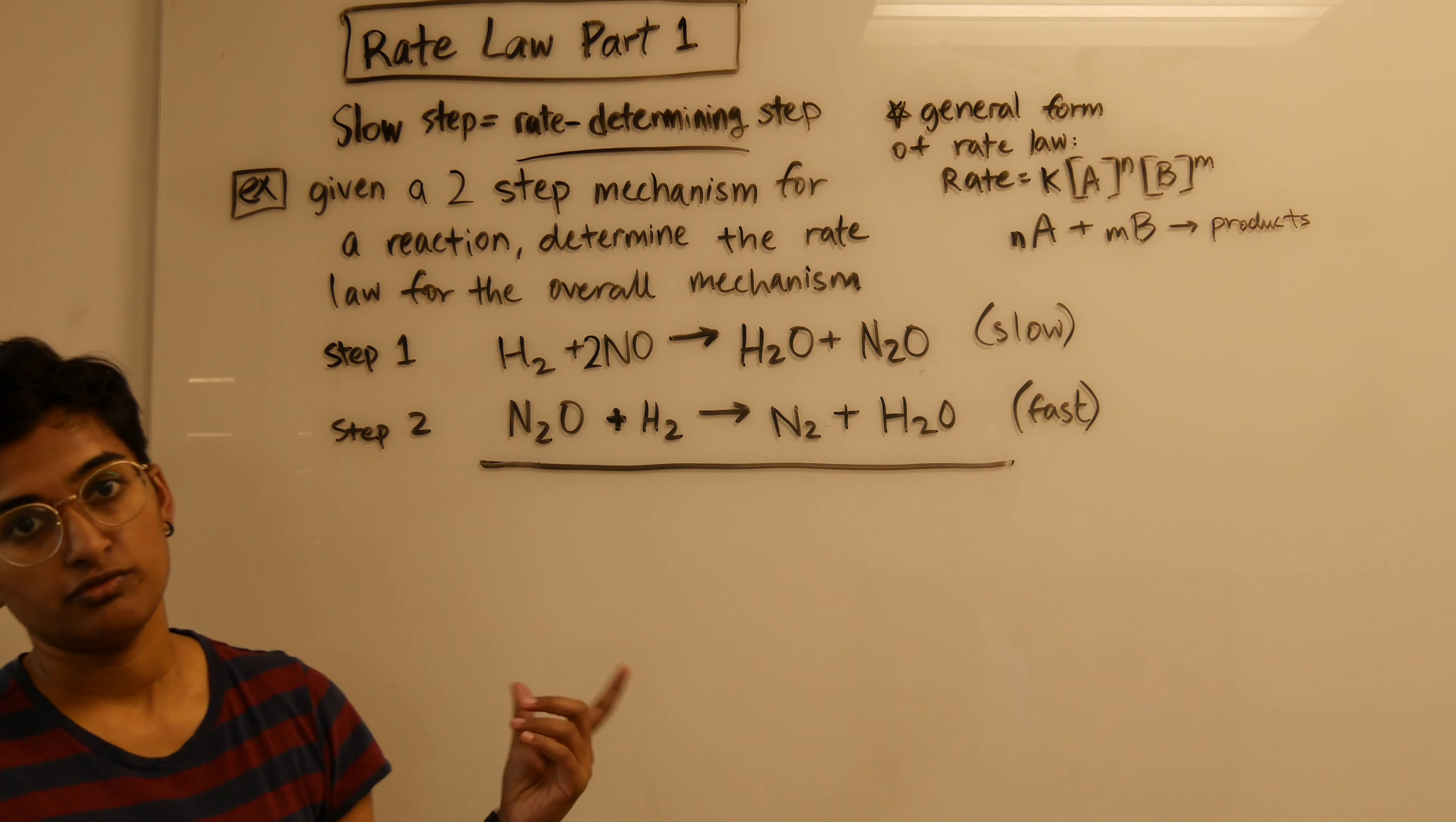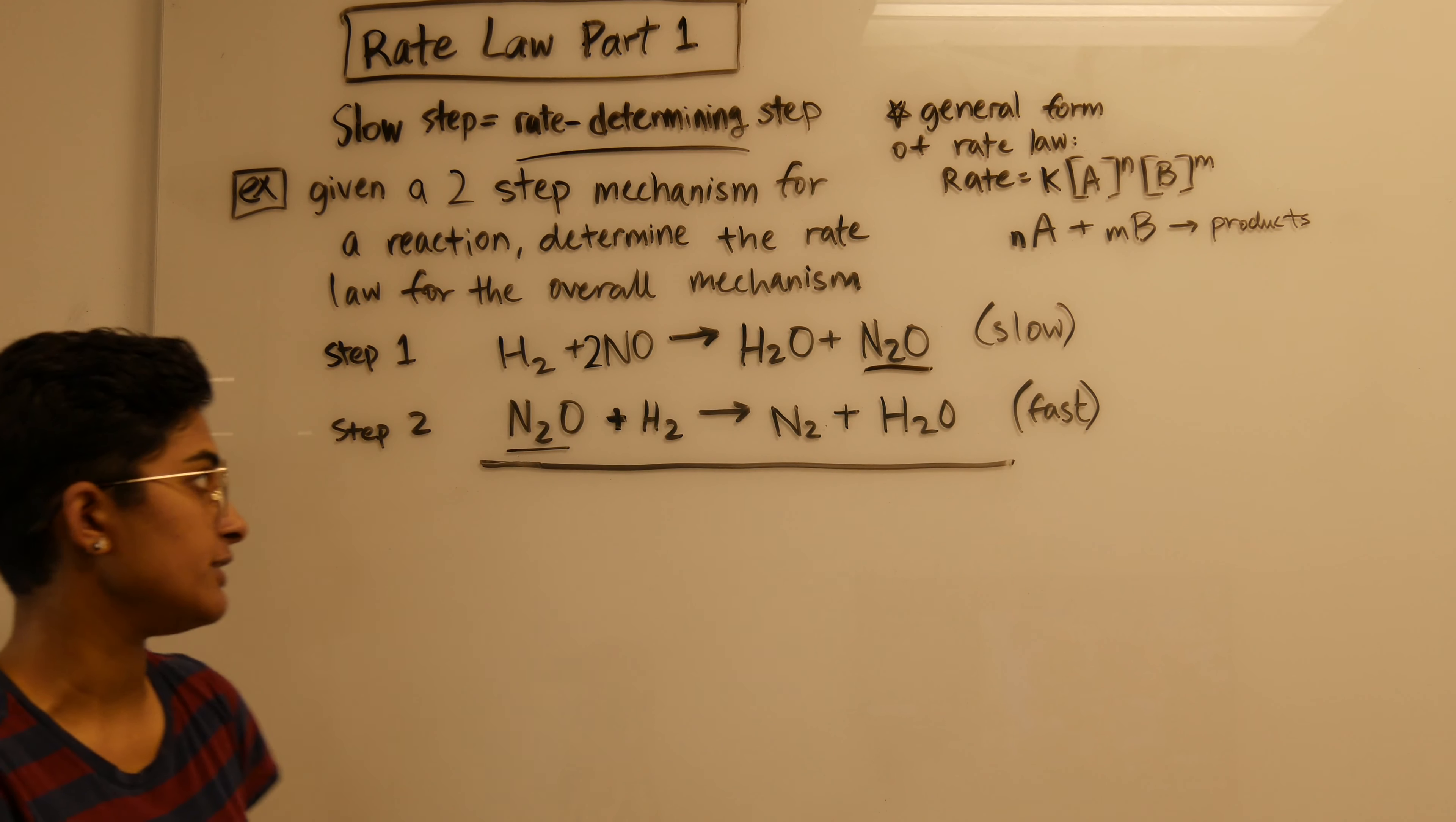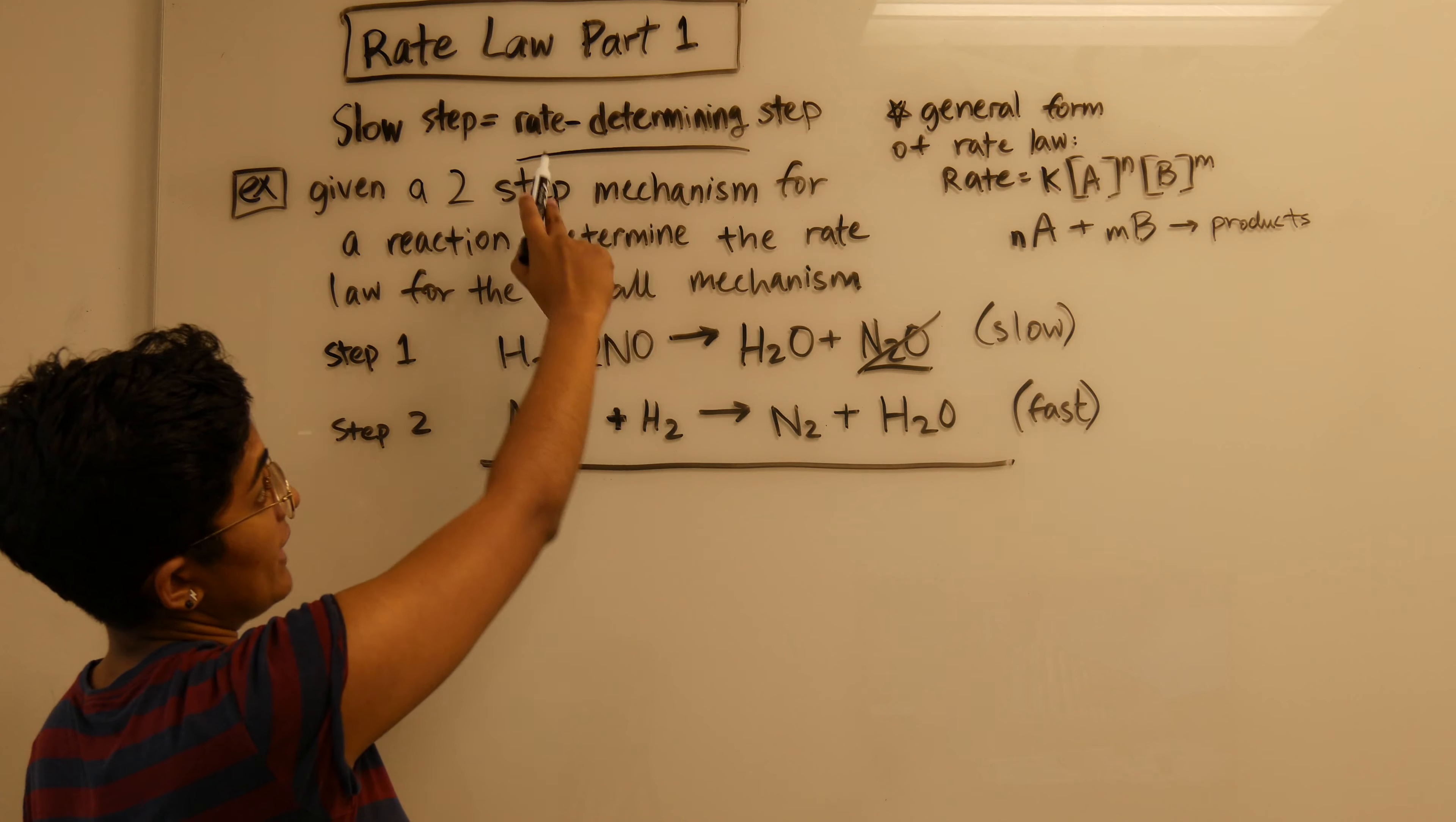For a problem like this, it would tell you to figure out what the overall rate law is based on the overall mechanism. We would first have to find out what the overall mechanism is. These are intermediates because they don't show up in the overall mechanism, so these can't show up in your overall rate law. Intermediates can never be in the final rate law. That won't be an issue for this one because we're going to base our rate on the slow step and these two reactants are neither of them intermediates.